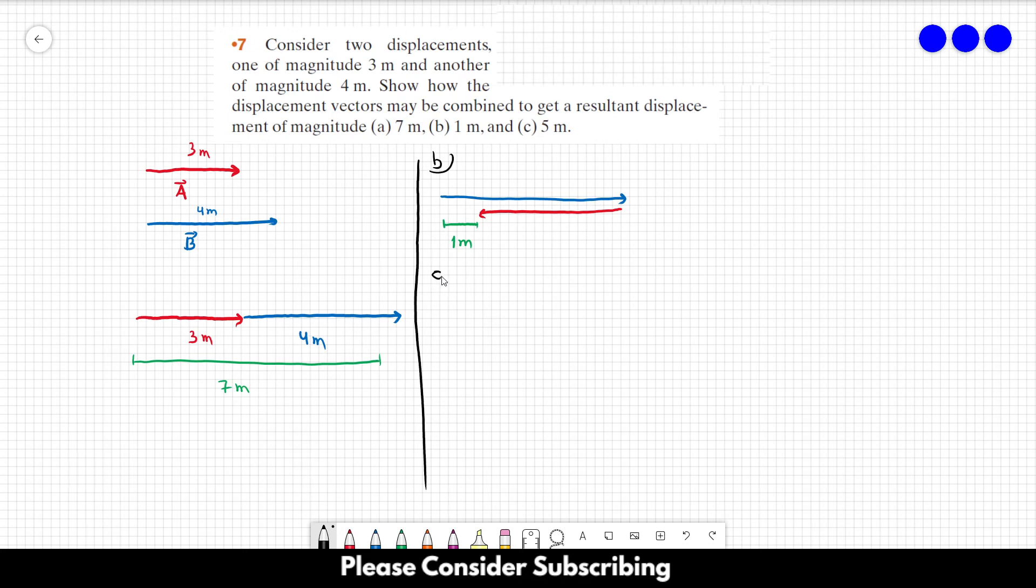For letter C, you just have to align them perpendicular to each other. This is our vector B, this is our vector A, so this is 4 meters, this is 3 meters, and this is 5 meters. This is the famous triangle, the 3-4-5 right triangle.